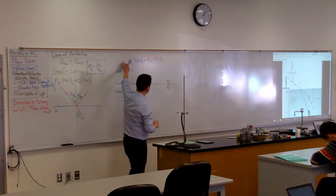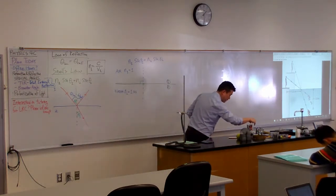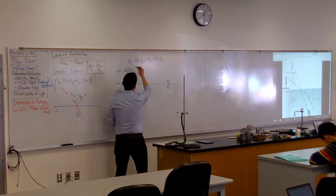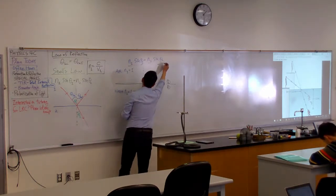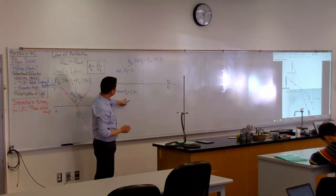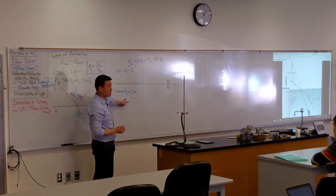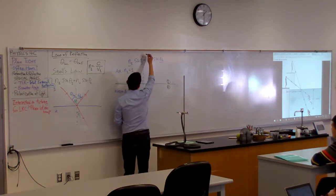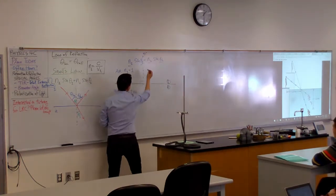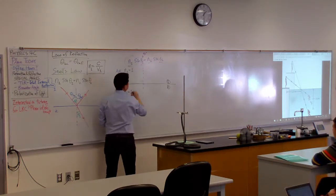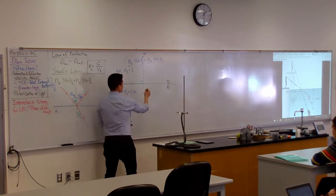So this is an expression containing four different symbols and I know two of them. Do I know a value of any of the symbols? Which one? Theta 1. Yeah, we know theta 1, 90 degrees. So what's the left-hand side actually? Just the one, right?